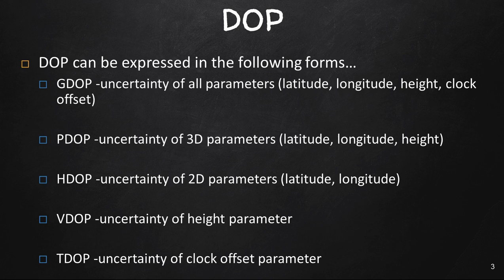DOP can be expressed in the following forms. GDOP, which stands for the Geometric Dilution of Precision, is the uncertainty of all parameters: latitude, longitude, height, and clock offset. PDOP is also the uncertainty of the latitude, longitude, and just the height. HDOP, which is the horizontal dilution of precision, is the uncertainty of the 2D parameters, just your latitude and longitude.